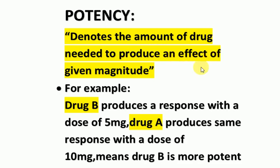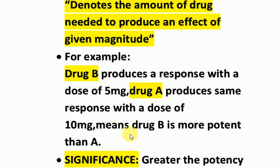Potency denotes the amount of drug needed to produce an effect of a given magnitude. For example, drug B produces a response with a dose of 5 mg, while drug A produces the same response with a dose of 10 mg. This means drug B is more potent than drug A, because it produces the same response with a lesser dose compared to drug A.